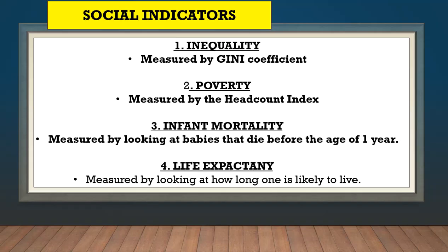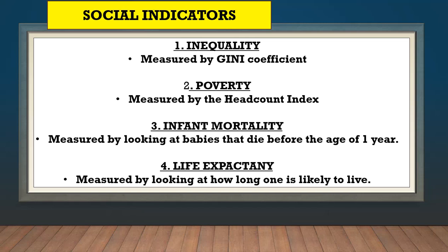The last social indicator we'll look at is life expectancy. Life expectancy is measured by looking at how long one is likely to live. These social indicators obviously tell us how the country is doing.